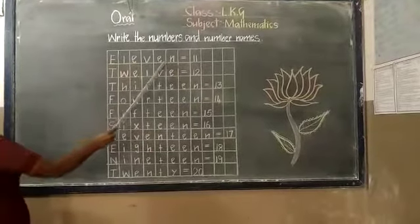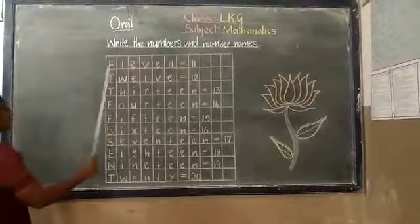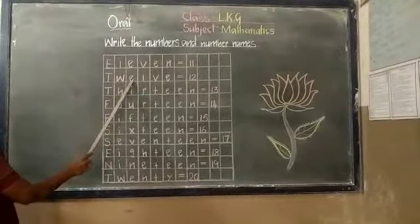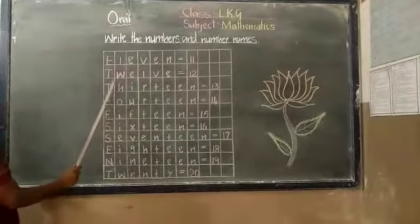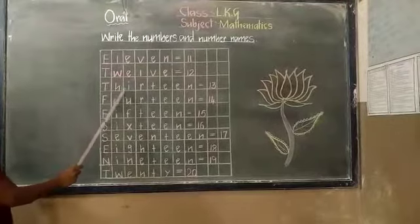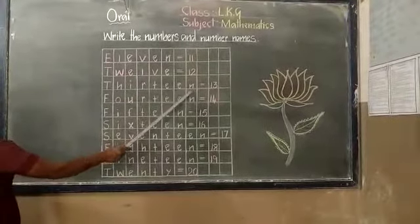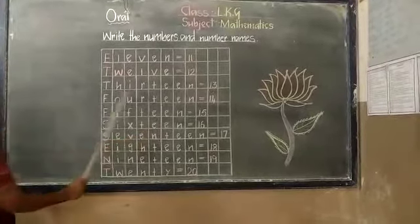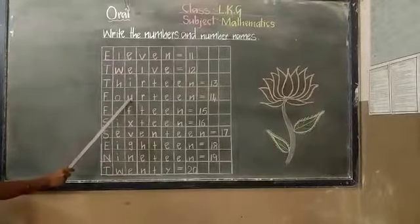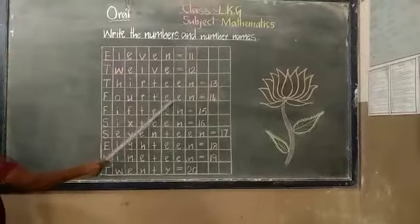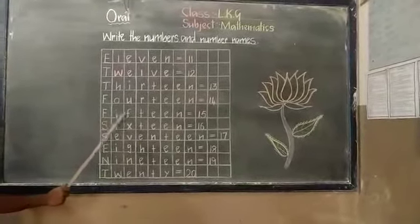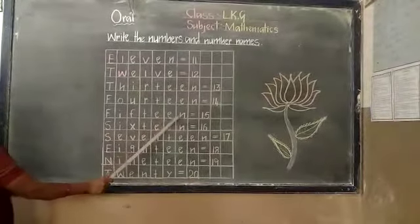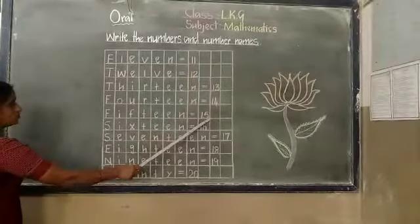E-L-E-V-E-N 11, T-W-E-L-V-E 12. Good children. T-H-I-R-T-E-E-N 13. Yeah, F-O-U-R-T-E-E-N 14, F-I-F-T-E-E-N 15. Super children, very good.